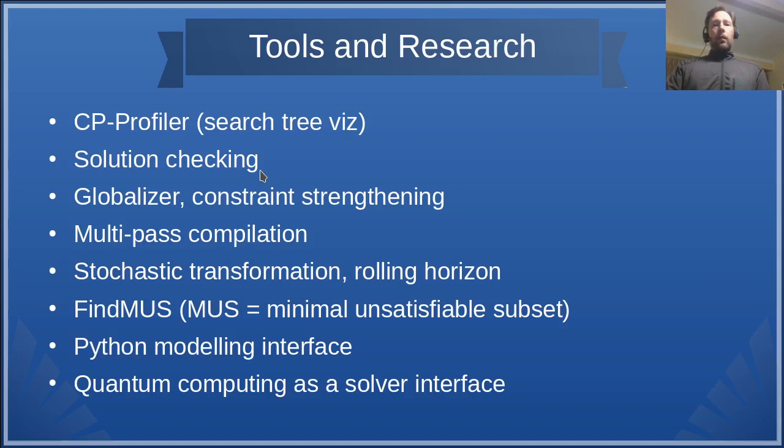The releases of MiniZinc have several tools packaged in them. For example, findMUS, which is a tool to find infeasibilities in the model, sometimes called IIS. There is a multipass compilation. There is a Python modeling interface. And some prototypes, for example, globalizer and constraint strengthening. These are tools which work by suggestion. So they analyze the model and try to suggest some generalizations. There is an interface to quantum computing, a prototype, which is largely similar to SAT.